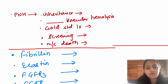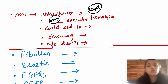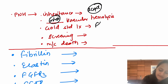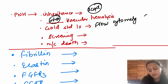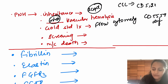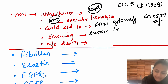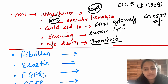PNH (paroxysmal nocturnal hemoglobinuria) is an acquired disorder — not genetic. The PIGA gene is affected, leading to deficiency of GPI-linked proteins. It causes intravascular hemolysis with hemoglobinuria. Gold standard investigation is flow cytometry, looking for CD55 and CD59 deficiency. Similarly for CLL, flow cytometry shows CD5 and CD23 both positive. Sucrose lysis test is the screening test; the most common cause of death in PNH is thrombosis.